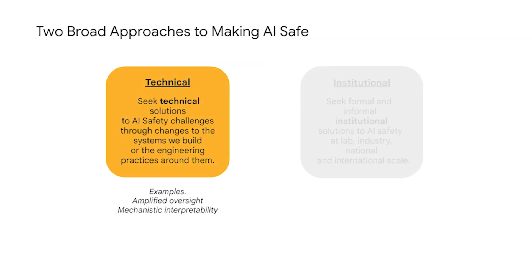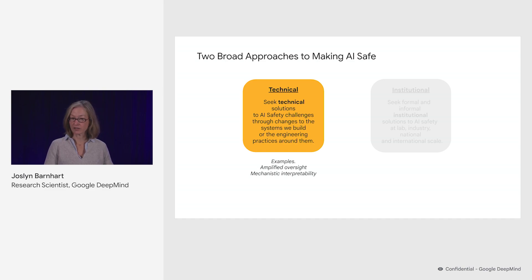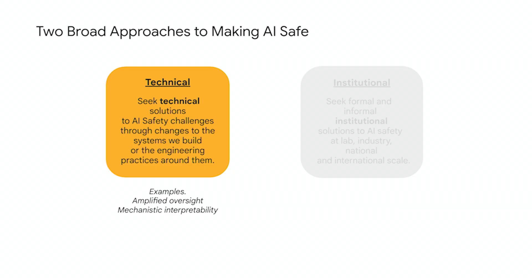So far in this course, you've heard a lot about technical solutions to AI safety challenges — thinking about technical approaches to the way that we build and engineer systems, and the practices we include around them to achieve more safe development and deployment of our models. Examples include amplified oversight, mechanistic interpretability, and many other methodologies. This section is going to look at a different approach: an institutional approach.